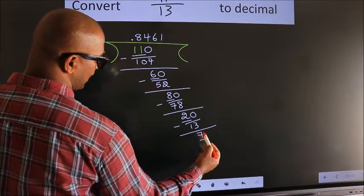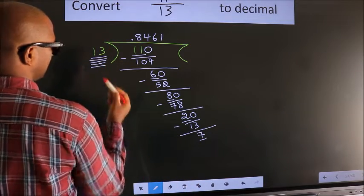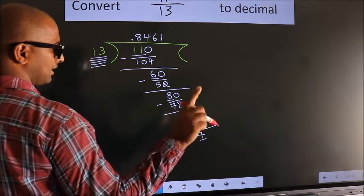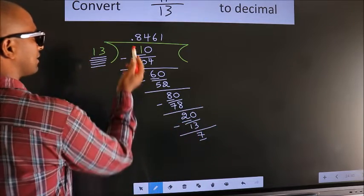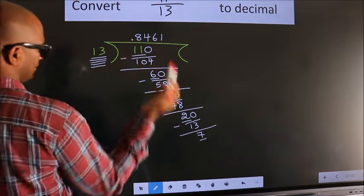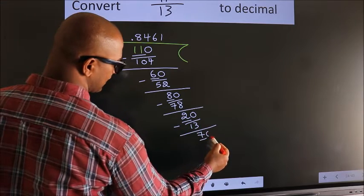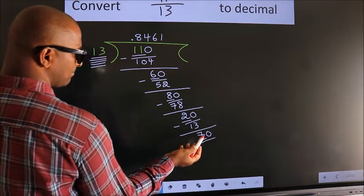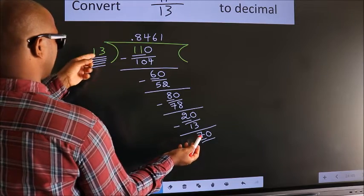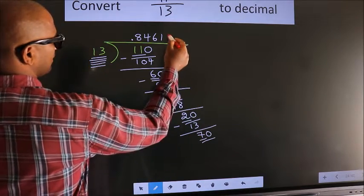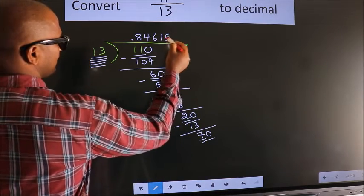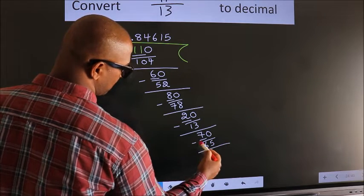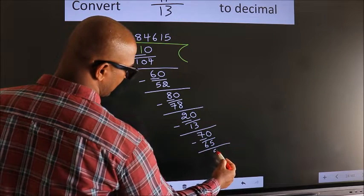Here we have 7 and here 13. 7 is smaller than 13, and we already have the decimal, so we can directly take 0 — so 70. A number close to 70 in the 13 table is 13 fives, 65. Now we subtract and we get 5.